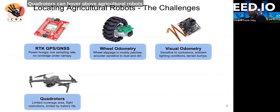Quadrotors can hover over agricultural robots and provide location service. However, this approach is dependent on the field of view of the quadrotor camera, the battery life, and flight height restrictions.